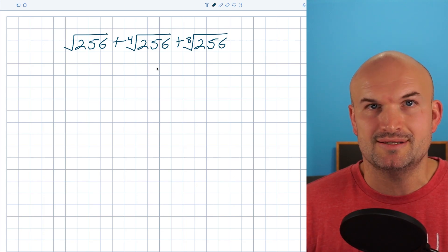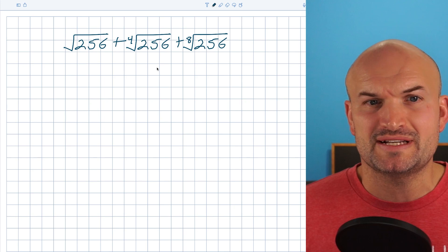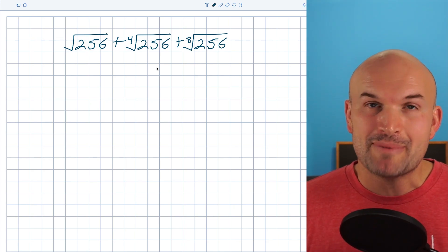First thing I noticed on this problem is the radicands are all the same, 256. You might not be familiar with 256 as a square number, a quartic number, or a number raised to an eighth power, but that's okay.